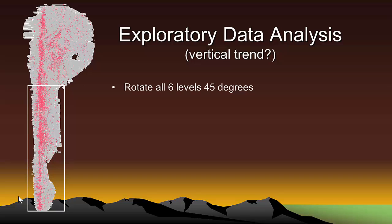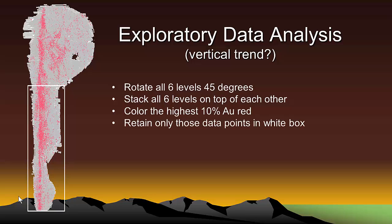First, I have rotated all six levels by 45 degrees using the rotated x and y coordinates shown earlier in the spreadsheet. Then, I stacked all six levels on top of one another. And next, I colored the highest 10% of the gold grades red and left the others colored gray. And finally, I projected all of the blast hole samples within the white box to a single cross-sectional plane.